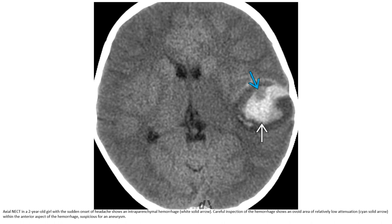Intraparenchymal hemorrhage. Careful inspection of the hemorrhage shows an ovoid area of relative low attenuation within the anterior aspect of the hemorrhage, suspicious for an aneurysm.